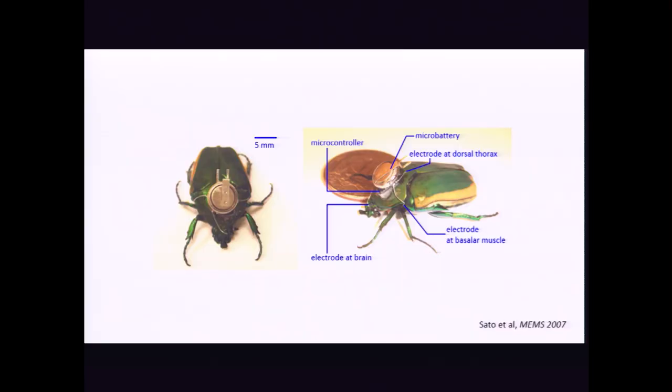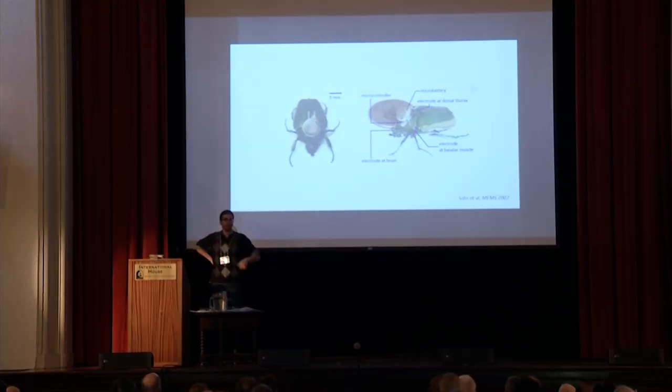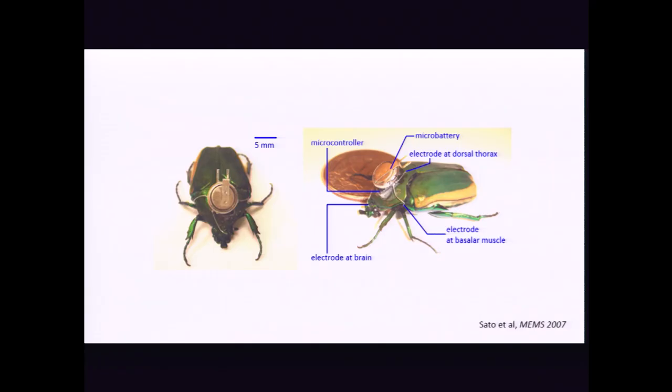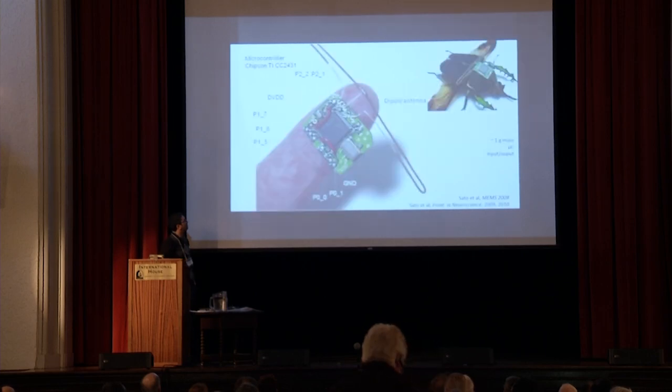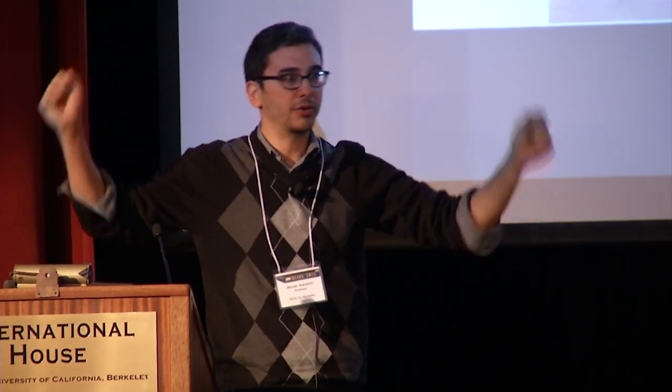So a few years ago now, we showed that if we took living insects and we put little radios on them with very tiny little batteries and knew where to stimulate the brain and the muscles, we could turn them on and off and fly them around like little airplanes. So this was work that was initially done in beetles. What's there is a cochlear implant battery. These beetles are very small. They're a centimeter and a half about. There's a tiny little microprocessor that's very low power.